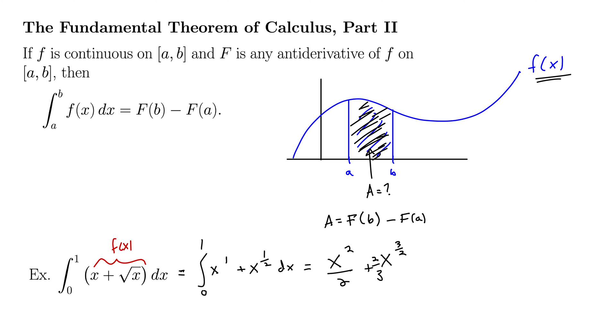And now we don't write plus c, because this is a very definite thing here. So instead of writing plus c, we draw this vertical line like so. That's not a very good line. Something like this. And then we say from 0 to 1, which means we're evaluating it from these two limits of integration.